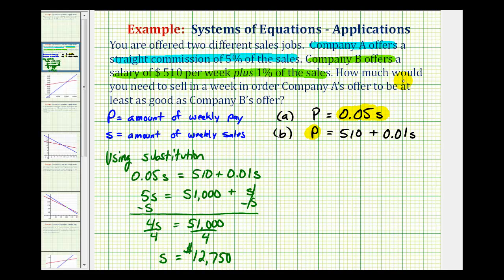And going back to our question, it says how much would you need to sell in a week in order for company A's offer to be at least as good as company B's offer? So when you sell $12,750, the straight commission offer is going to be just as good as the salary plus commission offer. So the answer is $12,750.